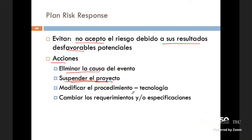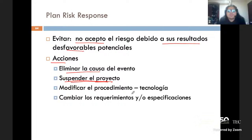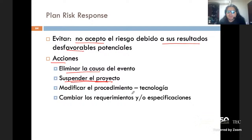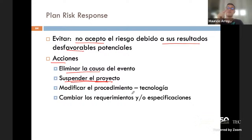Surge la duda: ¿bajo qué criterios puedo generar un plan de mitigación? Solo si yo decido aceptarlo como mitigar. Estoy hablando de cuatro tipos de planes de respuesta y ahorita solo estoy en evitar. Si mi plan de respuesta es evitar, lo que significa es que cierro el chinamo —el riesgo no lo tolero, esa es la forma de decirlo.